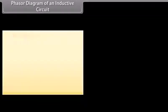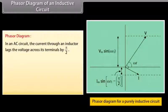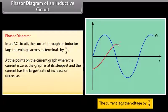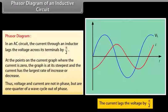Phasor diagram of an inductive circuit: in an AC circuit, the current through an inductor lags the voltage across its terminals by π/2. At the points on the current graph where the current is zero, the graph is at its steepest and the current has the largest rate of increase or decrease. Thus, voltage and current are not in phase but are one quarter of a wave cycle out of phase.